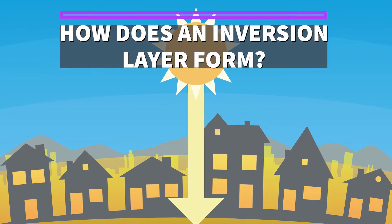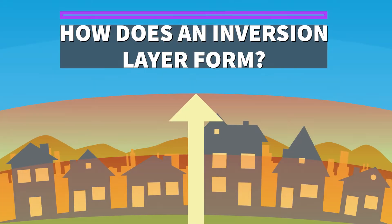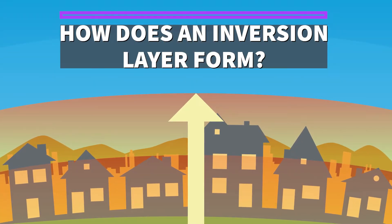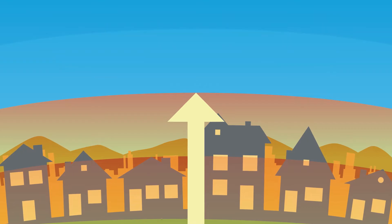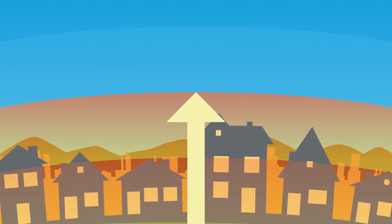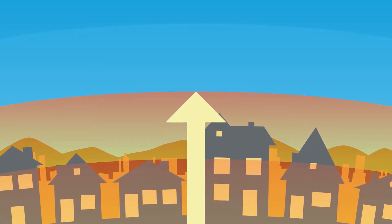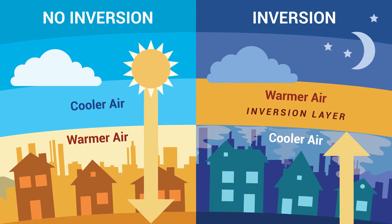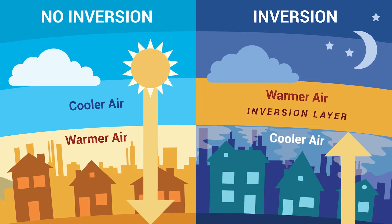How do inversion layers form? On calm, cold winter nights, surface temperatures can quickly drop as the Earth loses heat. Inversion layers are formed as air comes in contact with the Earth's cold surface overnight, lowering air temperatures at ground level. Since warm air rises, the cooler air and pollutants underneath the inversion layer cannot escape. The warm layer acts as a lid, trapping the cold layer of stagnant air along with any pollutants at ground level.